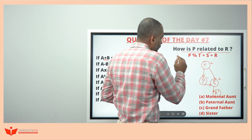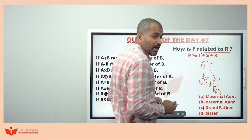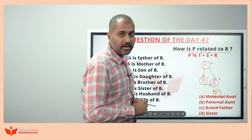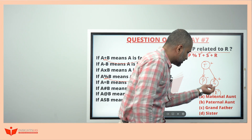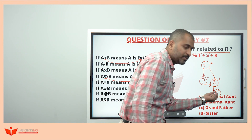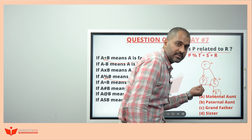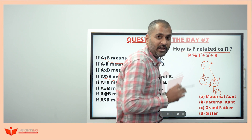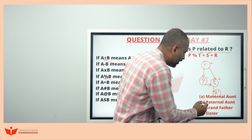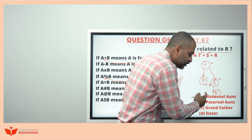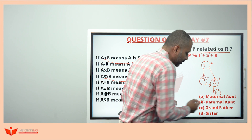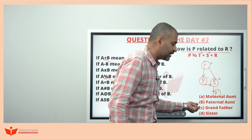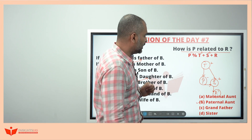Time to answer the question: how is P related to R? From R's perspective, R's father is S, and S's sister is P. Father's sister is aunt — to be specific, paternal aunt.